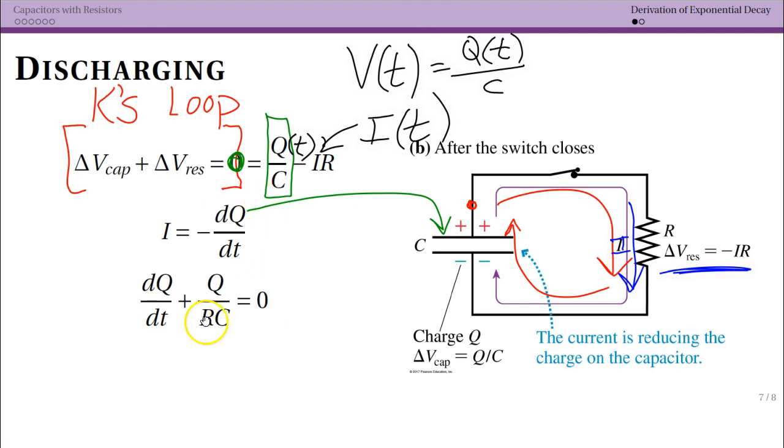So all I've done is plugged in dQ dt for I, notice that that minus sign cancels with that minus sign, and I've divided the whole thing by R. And that's because of where I'm trying to get with the math. So the reason R is now on the bottom is I've divided the whole thing by R and zero divided by R is still zero. So now I have this equation.